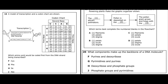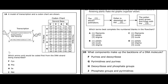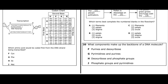Question sixteen: a model of transcription and a codon chart are shown. Which amino acid would be coded first from the DNA strand being transcribed? During transcription, the DNA is negated to form mRNA, and thymine is replaced with uracil. Thymine → adenine → uracil; cytosine → guanine; guanine → cytosine. Reading the resulting mRNA codon: A-U-G. Using the codon chart with first base A, second base U, third base G — that codes for methionine (MET).